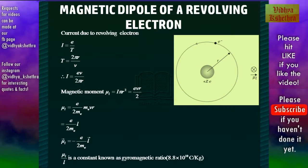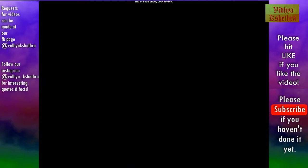Multiplying numerator and denominator by m_e, the mass of the electron, m_e × v × r is the angular momentum L. Hence the equation becomes μ_L = (e/2m_e) × L. Vectorially, μ_L = −(e/2m_e) × L, which is negative since the electron is negatively charged. The ratio μ_L/L is a constant known as the gyromagnetic ratio, which equals 8.8 × 10¹⁰ coulomb per kilogram.